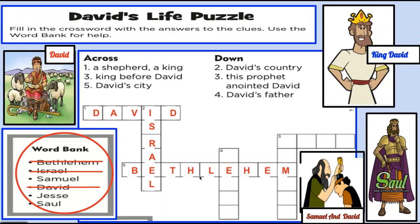Next, let's move to four down. We have an E. Four down — the clue is David's father. Now, we have Samuel, Jesse, and Saul left. But we know the second letter begins with an E. So that would make four down Jesse. Jesse was David's father. Cross him out.